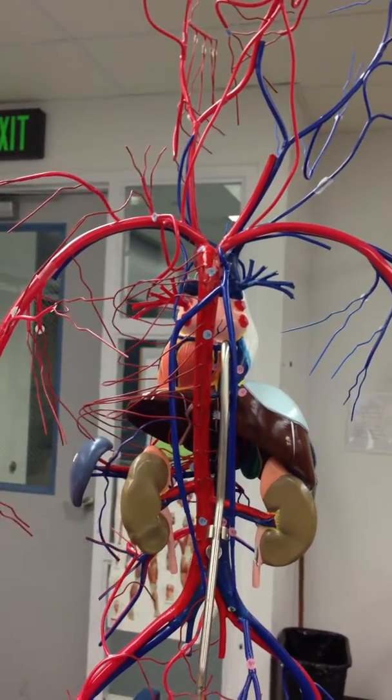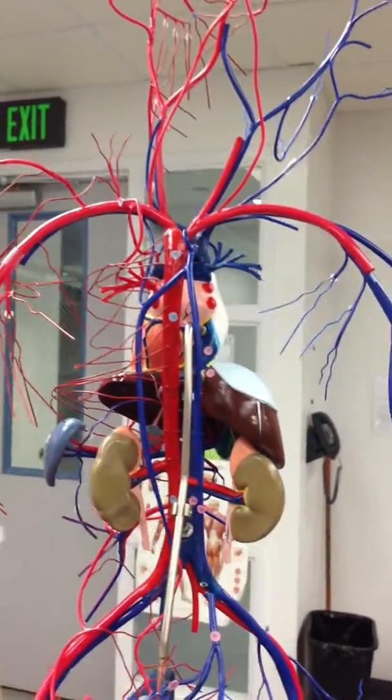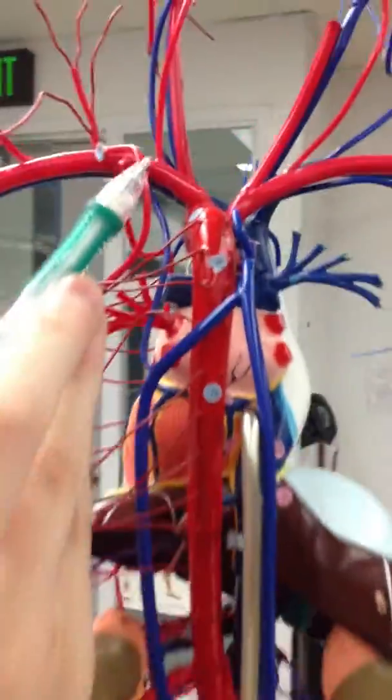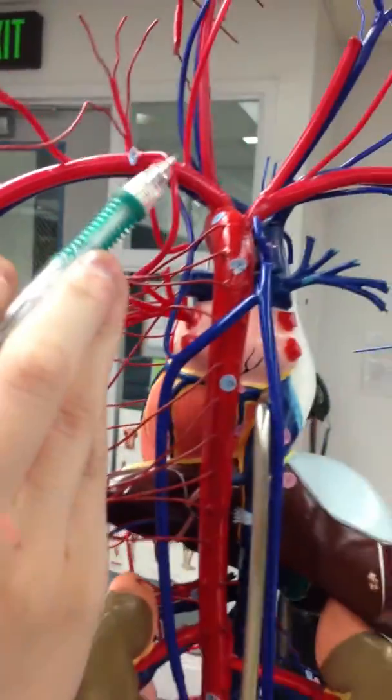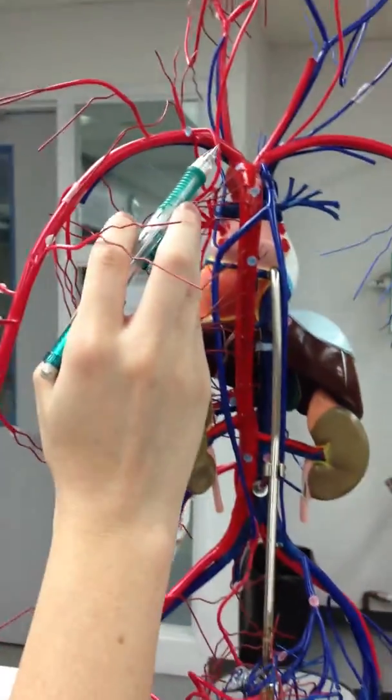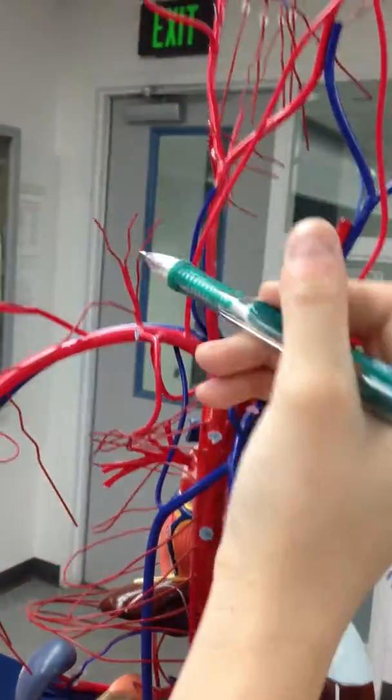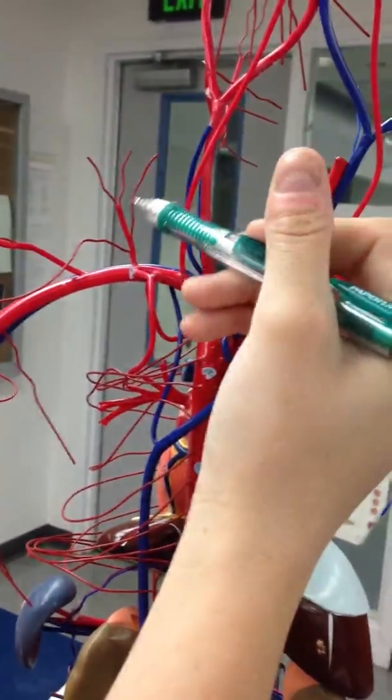The postcervical artery, which we are not 100% sure of, but we believe that it's this one, number 41, coming off of the subclavian. The subclavian and the thyrocervical trunks. This one is sticking up out of the top of the subclavian.